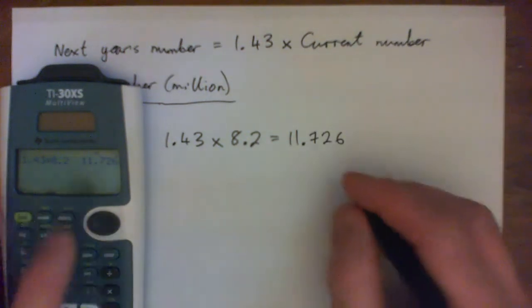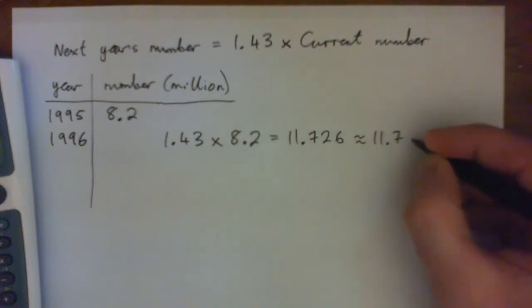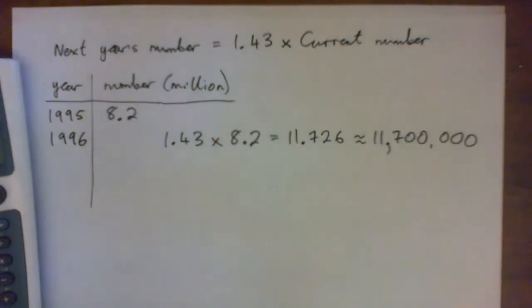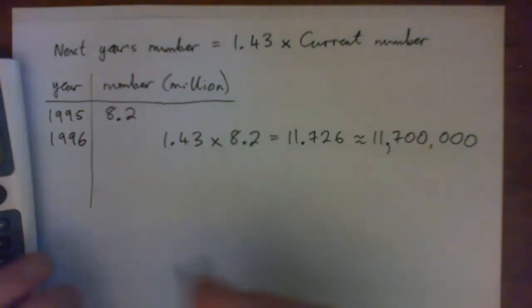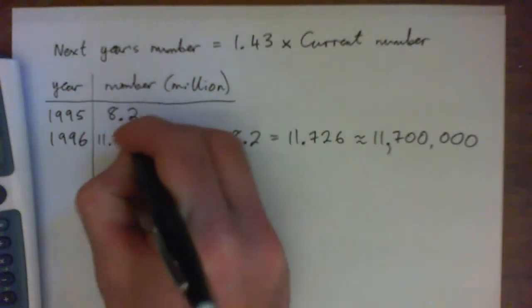Press pause if you need to, but you should get, you know, 11.726. Okay, but by the way, that's a million, so I'm just going to say that's approximately 11.7 million, right? Or as a number written out, it would look like about 11,700,000 approximately. Okay, so that's the answer. 1996, we got 11.726.